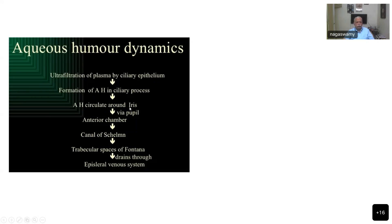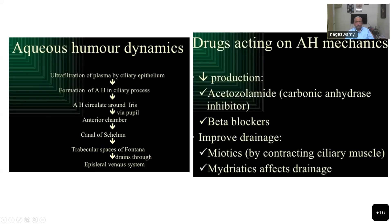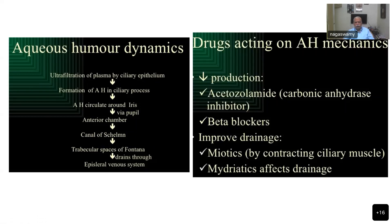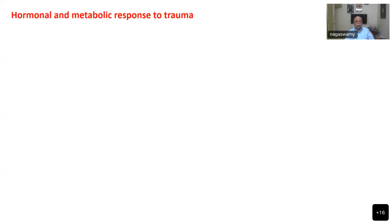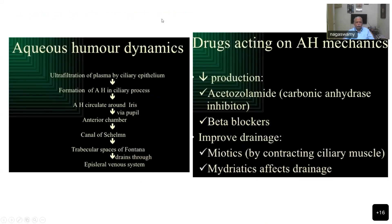Comparing to CSF circulation, this is also an ultrafiltration by the ciliary body epithelium, ultimately draining through the episcleral venous drainage. Drugs which can reduce aqueous humor production are acetazolamide, beta-blockers, and alpha-agonists. Osmotic agents improve drainage because they will soften the vitreous and improve the outflow.